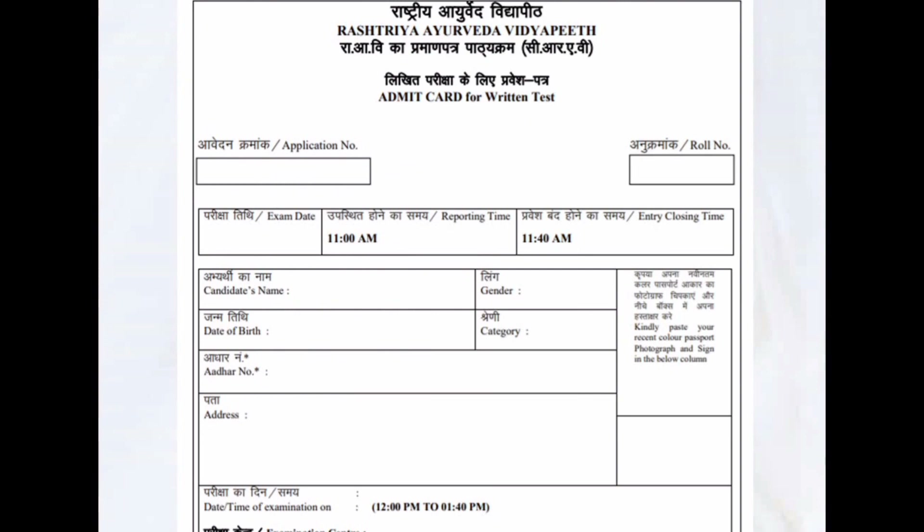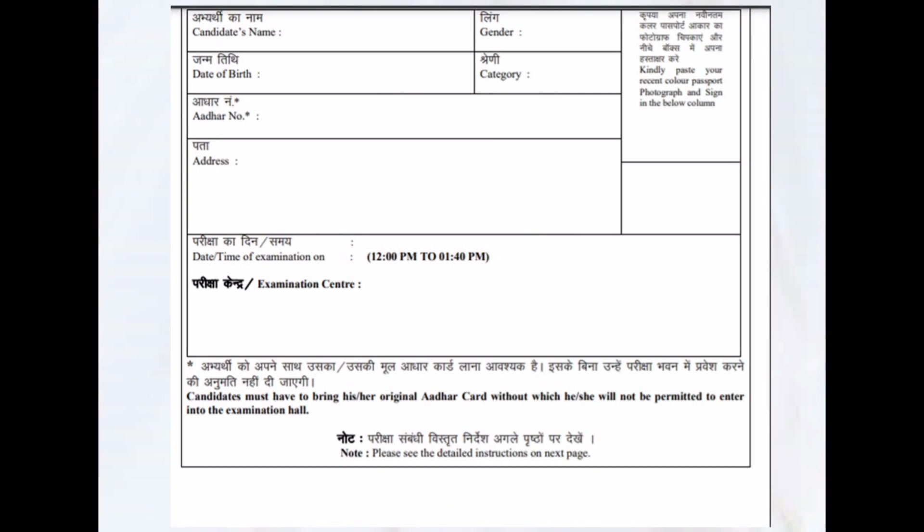The admit card is also available — the link is in the description, you can go there and take a printout directly. Fill all information on the admit card except the application number, roll number at the top, and examination center at the lower side. Other fields such as candidate's name, gender, date of birth, category, Aadhaar number, address, and photograph should all be filled by you.